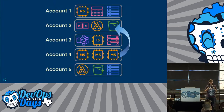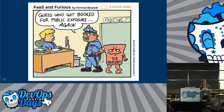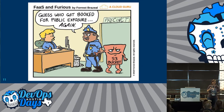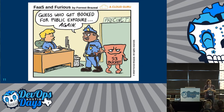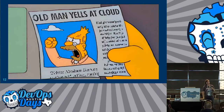Cross-account access is even harder. A lot of times they'll take shortcuts, and you might get something like this — they just make the S3 bucket public. Problem solved. You can do that with pretty much any resource; S3 is of course the most popular one.